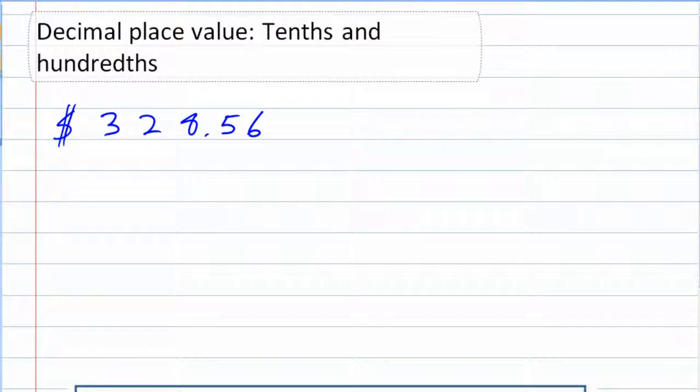For example, this 3 out in front here, it's pretty important to me, it being the first number. Now that 3, if I were to go there and ask for a withdrawal of all of my money, that 3 is important because that bank teller would give me three $100 bills.